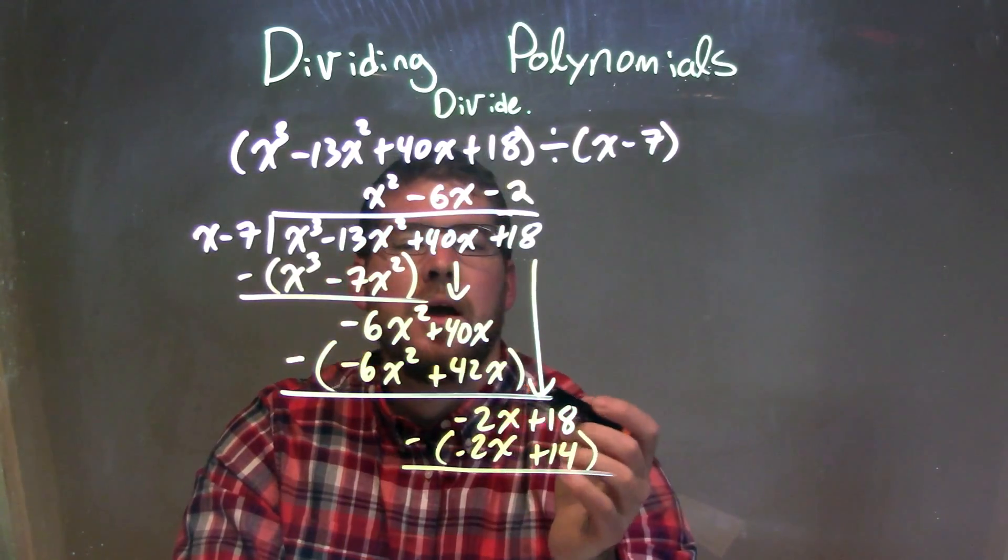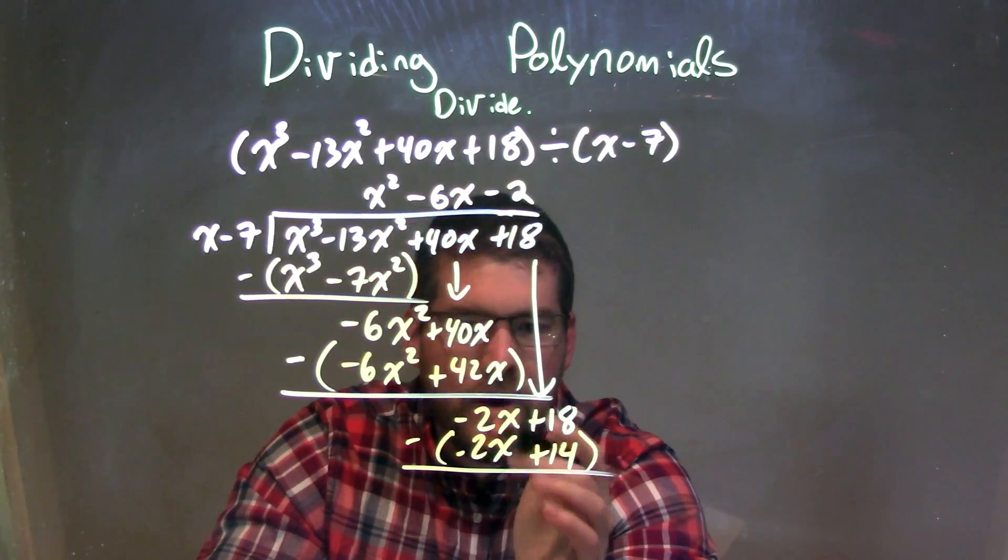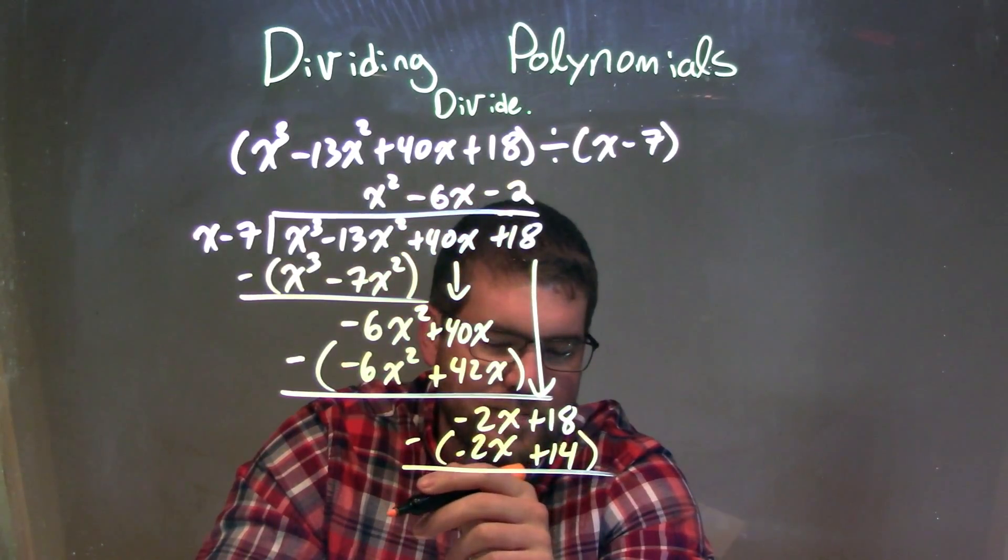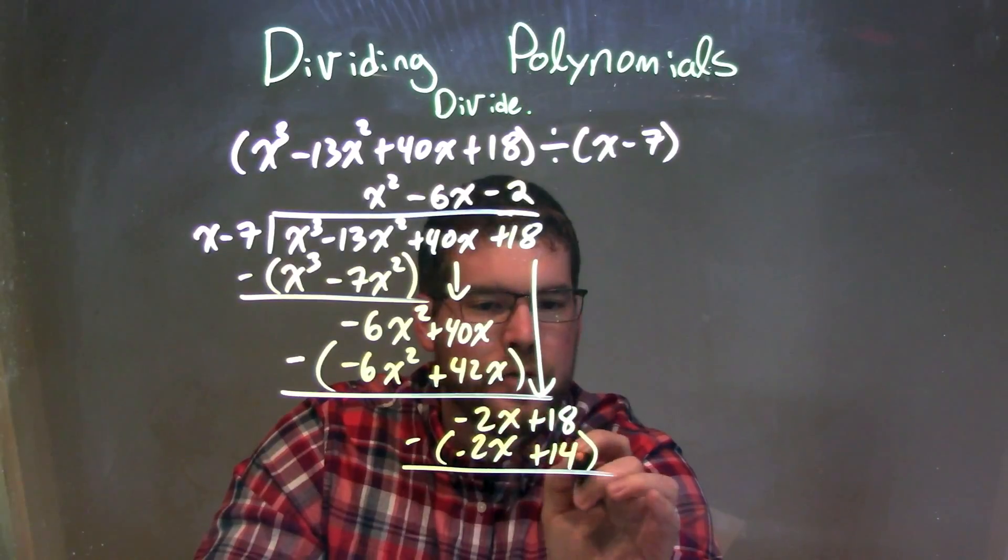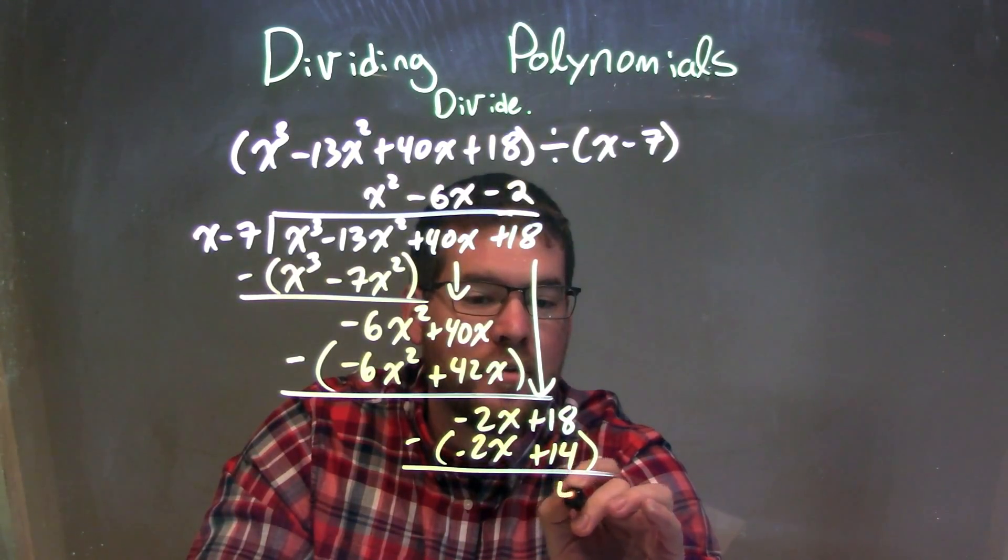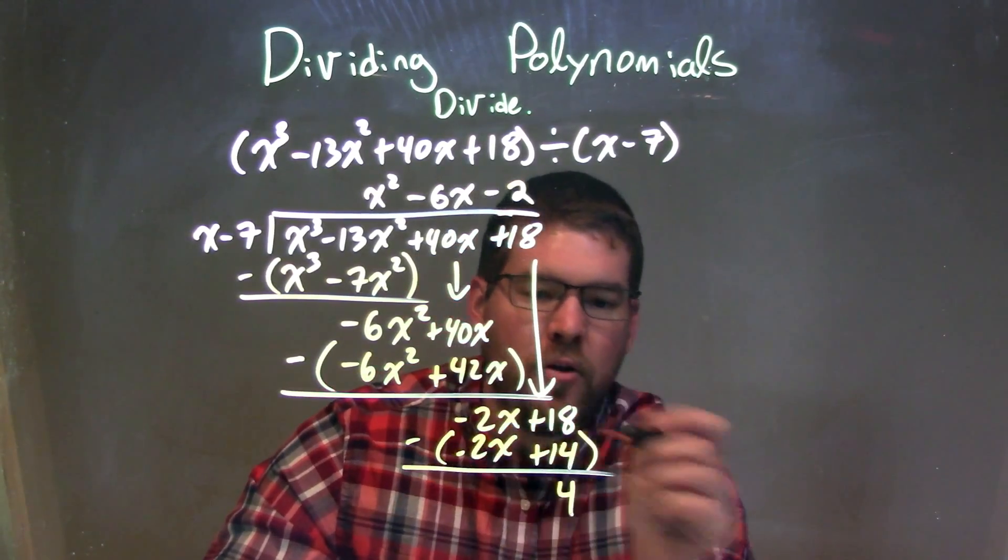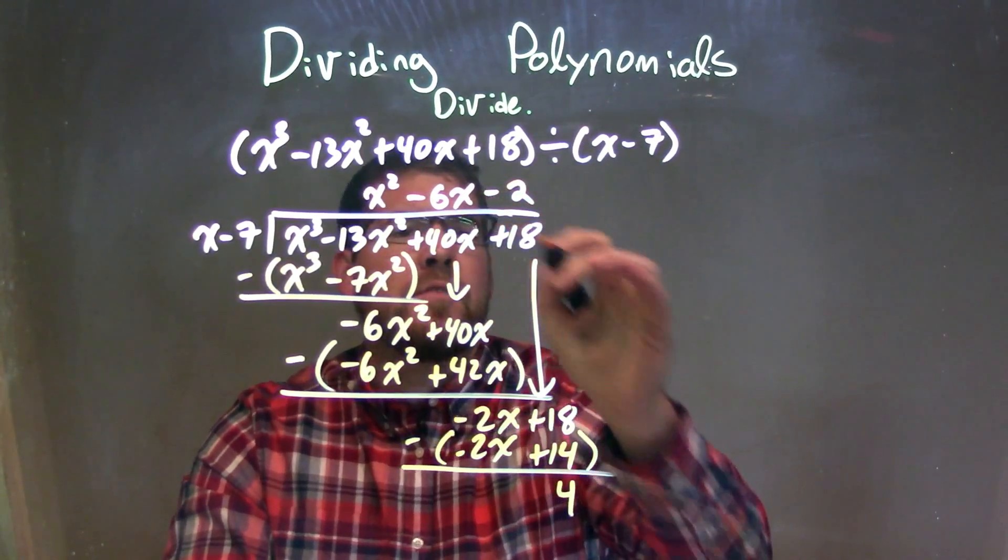We subtract the two. Minus 2x minus a negative 2x is like adding a positive 2x, zero. 18 minus 14 is just a positive 4. That is my remainder, that positive 4 right there.